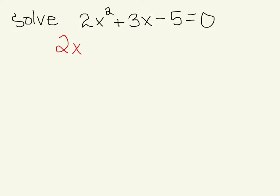So this is what we have now: 2x² minus 2x plus 5x minus 5 equals 0. We're factoring by grouping, so that means we take the first two terms and we use GCF on those, and we use GCF on those.